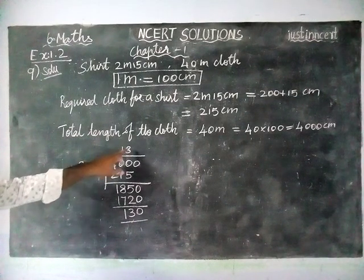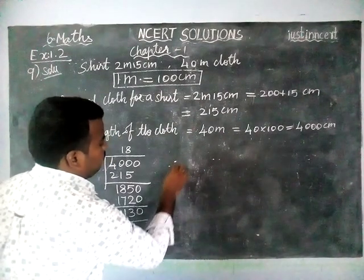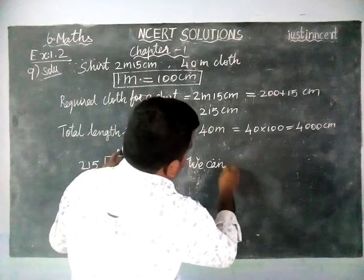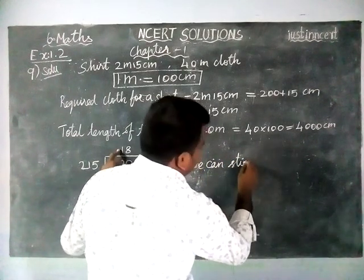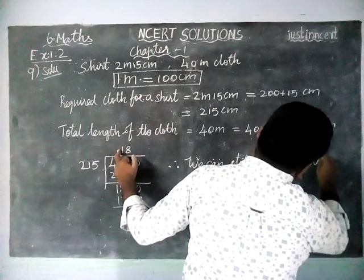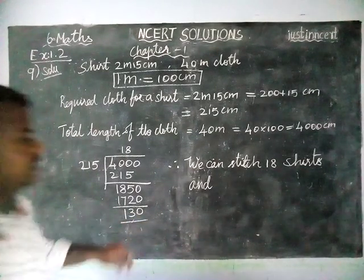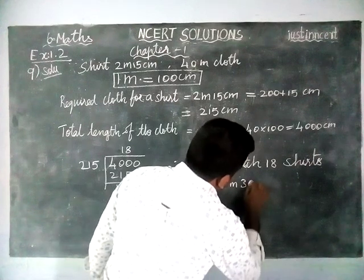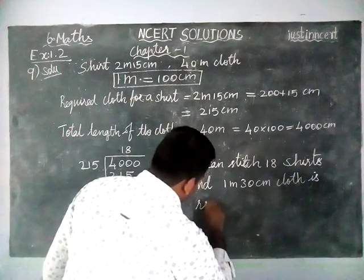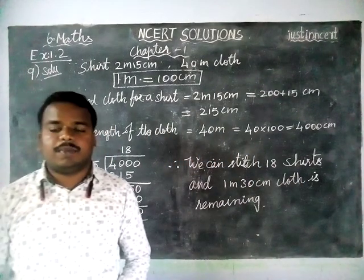The quotient is equal to the total number of shirts. The remaining is the remaining cloth. Therefore, we can stitch 18 shirts, and 130 centimeter — that is, 1 meter 30 centimeter cloth — is remaining. Kindly give your comments in the suggestions box.